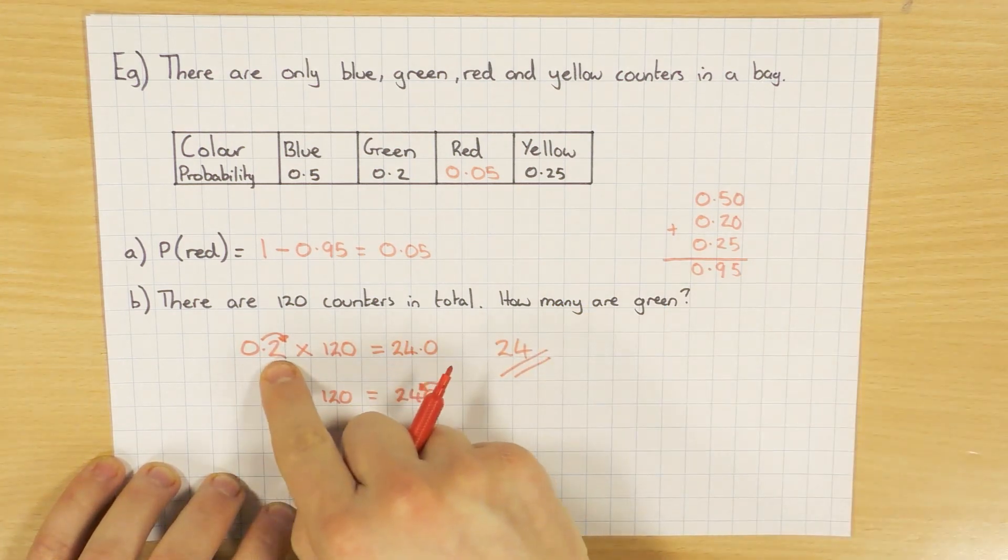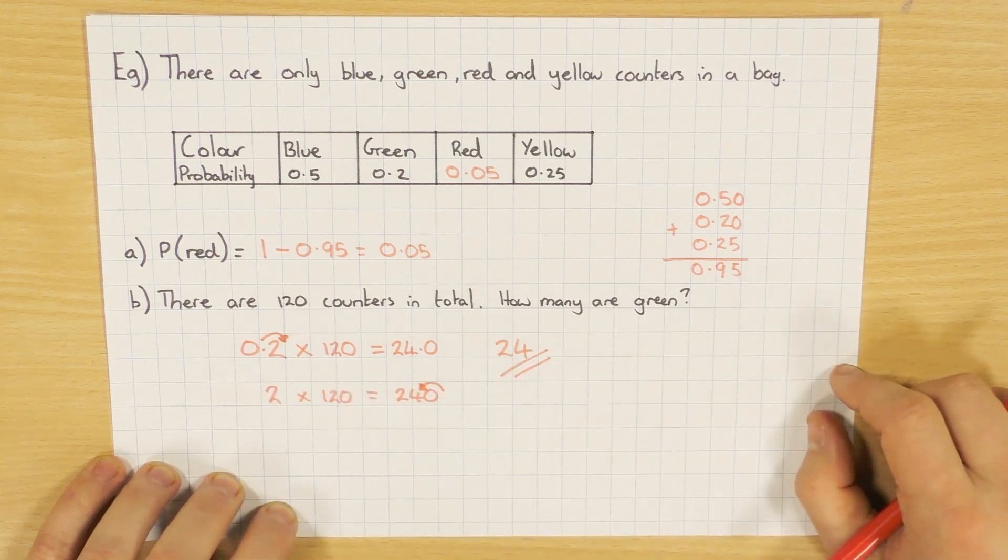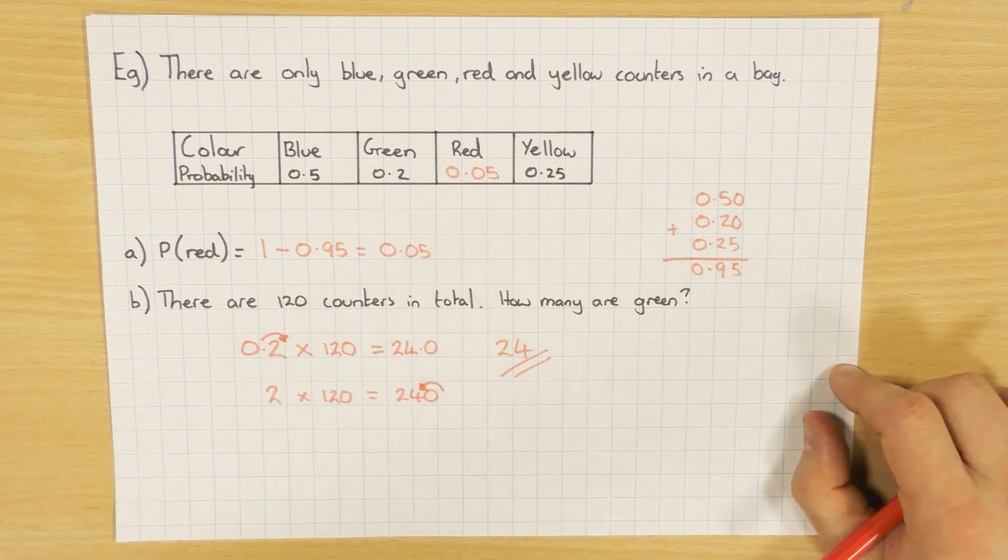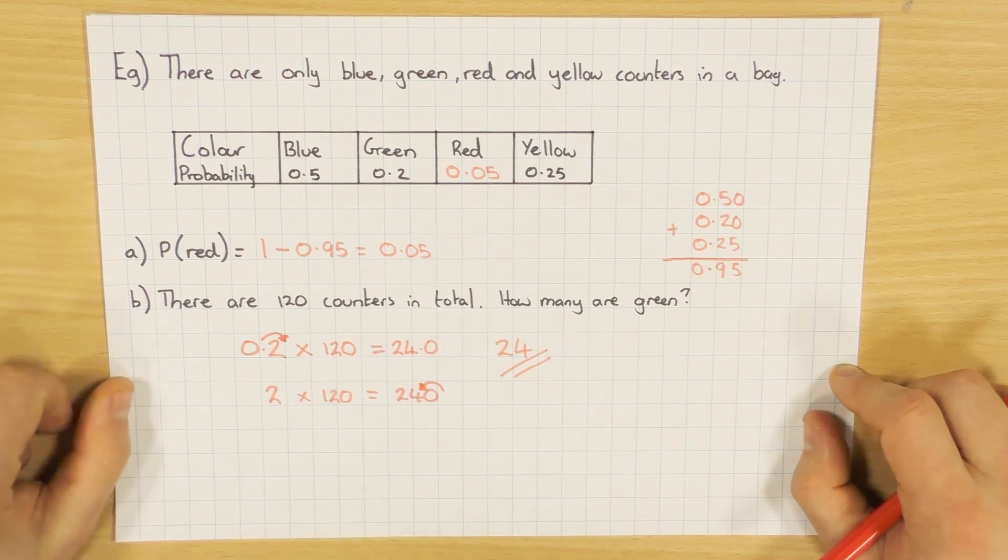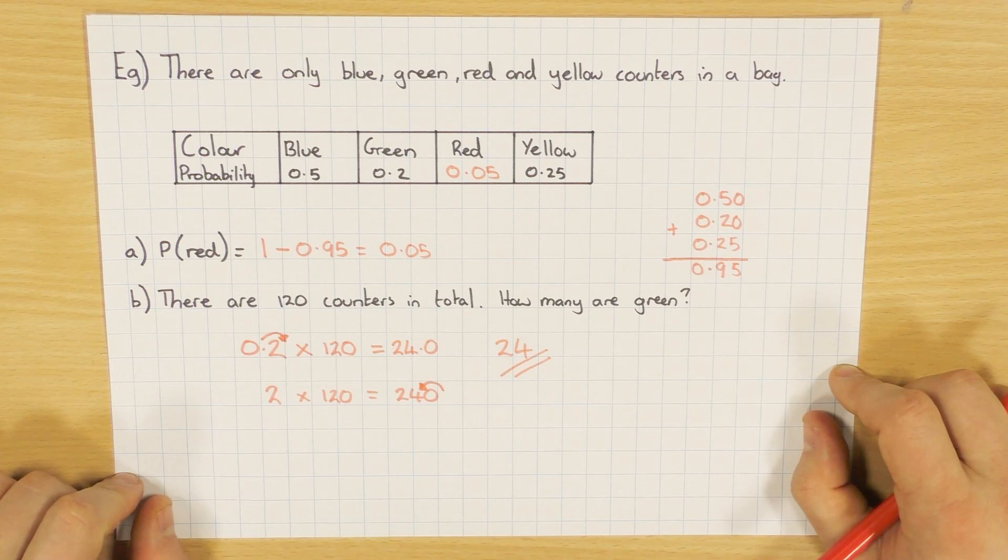Other ways you could do it, you could say, well, 0.2 is a fifth. So you could do one fifth of 120. Absolutely fine. I'd say different ways you can do it. Hopefully that helps, guys. Just some basic probability stuff there. Thanks for watching.